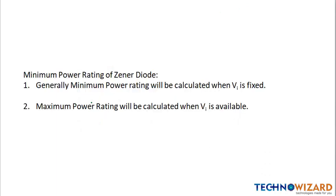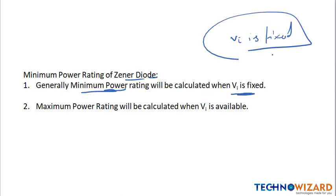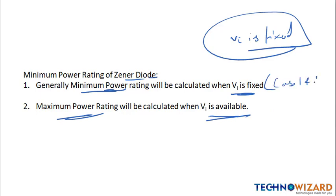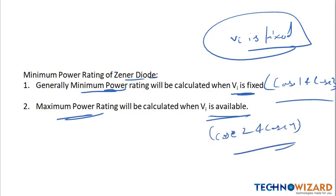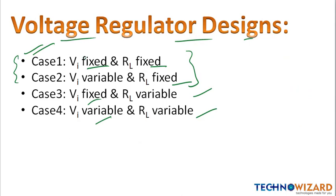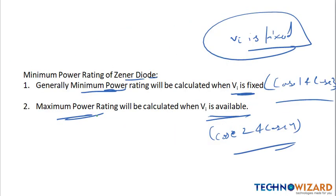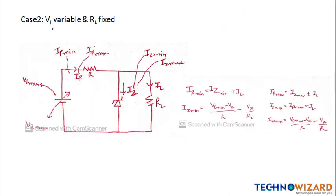One important point: minimum power rating of the zener diode is calculated only when Vi is fixed. Maximum power rating is calculated when Vi is variable. So from Case 1 and Case 3 we can find the minimum power rating, and from Case 2 and Case 4 we can find the maximum power rating, because in Cases 2 and 4 Vi is variable.